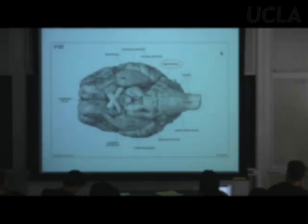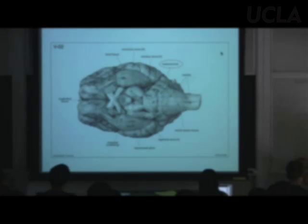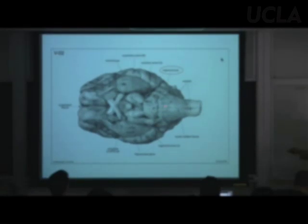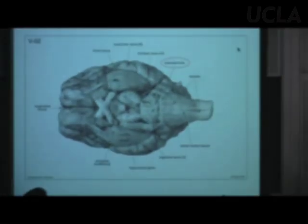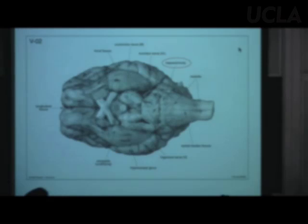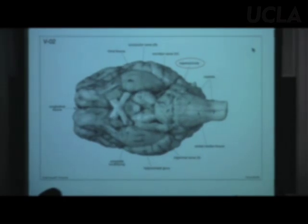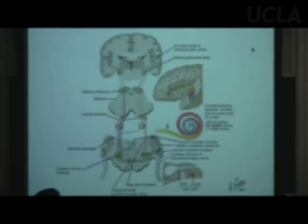Let's go over this system and what we've seen in lab. Here's a ventral view of the brain. Here is the trapezoid body again — it's in the metencephalon, and most of those axons are coming from the ventral cochlear nucleus, though the superior olive is also acceptable.